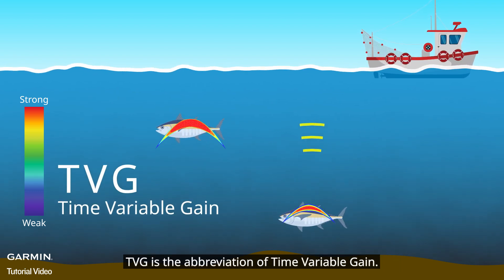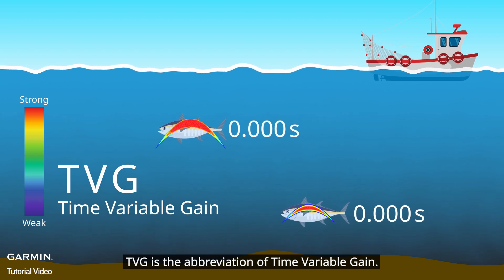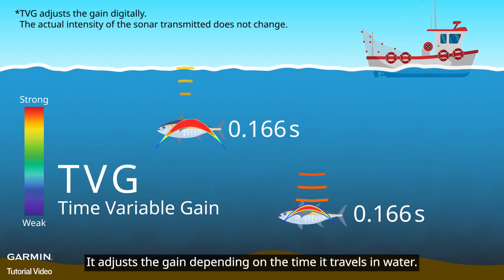TVG is the abbreviation of time variable gain. It adjusts the gain depending on the time it travels in water.